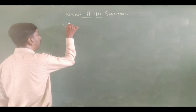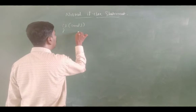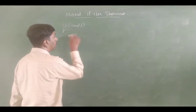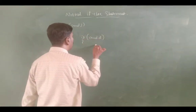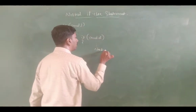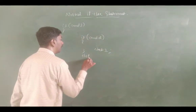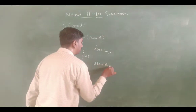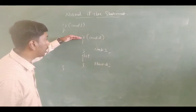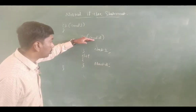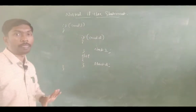If condition 1 is true, then control enters into the block. Again we have another if — if condition 2 is true, then statement 1 will execute. Then statement 2 is executed. This is the if-block.